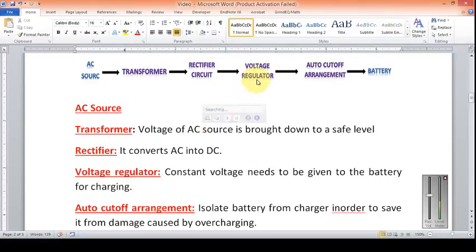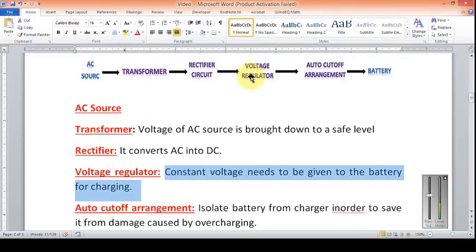The next component is the voltage regulator. We will require a constant voltage to charge the battery. We cannot go below a certain limit because the battery won't charge. We also cannot go above a certain limit because that will damage the battery. So we need a constant output voltage in order to safely charge the battery.